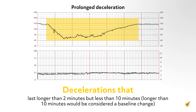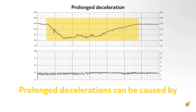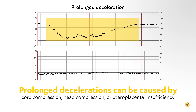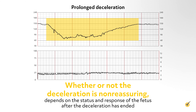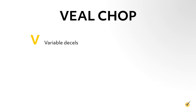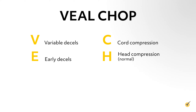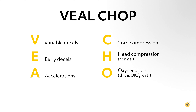Late deceleration of the fetal heart rate is a gradual decrease of greater than 30 seconds to nadir, and return to baseline associated with a uterine contraction, but the nadir occurs after the contraction. Late deceleration requires attention. Some interventions to correct late deceleration include stopping oxytocin if infusing, changing mom's position to lie on her left side, correcting maternal hypotension by lowering her head and increasing the IV infusion rate, and administering oxygen by mask.